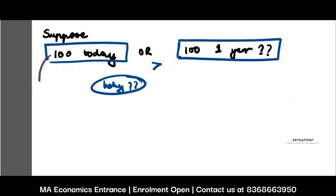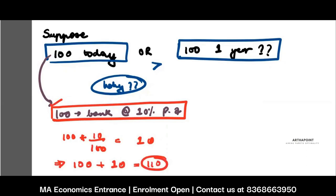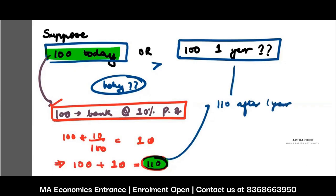Because if I give you 100 rupees today and you put it in a bank, and let's say the interest rate you earn is 10% per annum, then you will be earning 100 × 10/100 = 10. So you will have 100 plus 10 rupees interest, which is 110. So 100 rupees today would actually mean 110 rupees after 1 year, as against the 100 you are getting after 1 year.